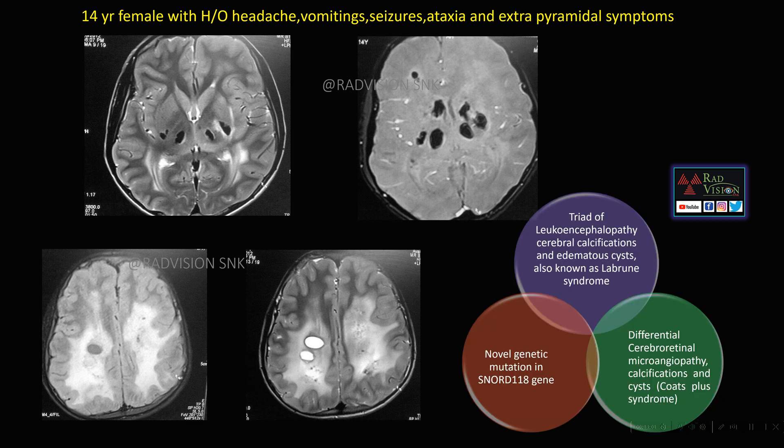This is a classical case of Labrune syndrome. Labrune syndrome presents as a triad of leukoencephalopathy, cerebral calcifications, and edematous cysts. There will be a novel genetic mutation in the SNORD-118 gene. Another common differential diagnosis to consider is cerebral retinal microangiopathy with calcifications and cysts, that is Coats-Plus syndrome. So leukoencephalopathy with edematous cysts and cerebral calcifications — remember Labrune syndrome.